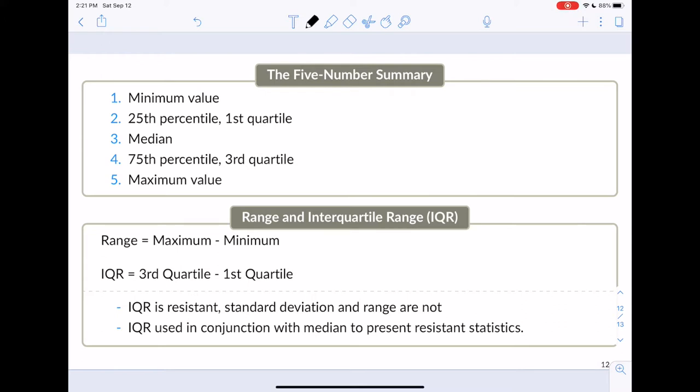The median, which is also known as the 50th percentile, and so that's going to say 50% of the data is below it, 50% is above.